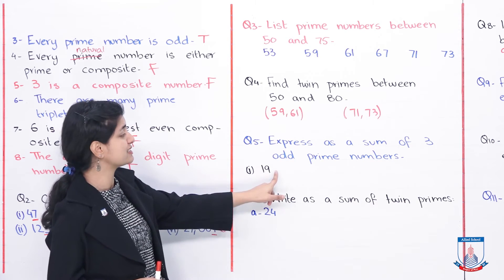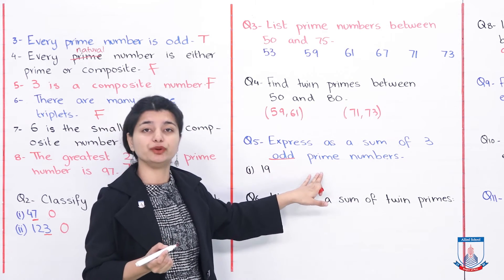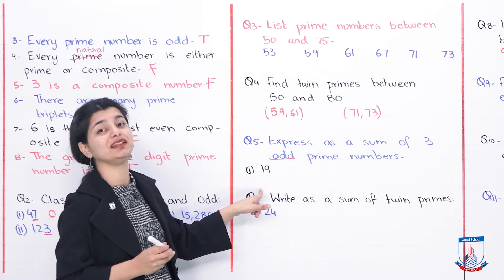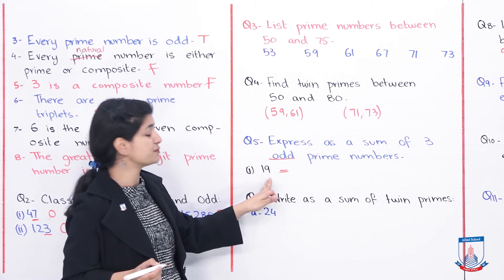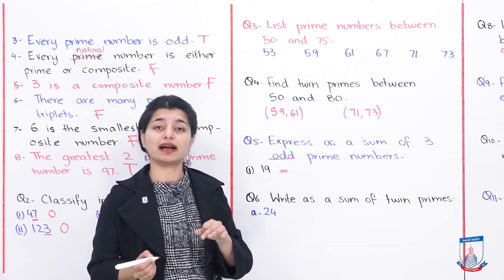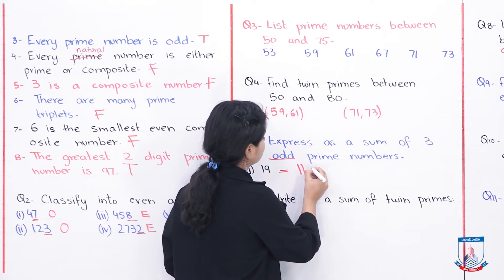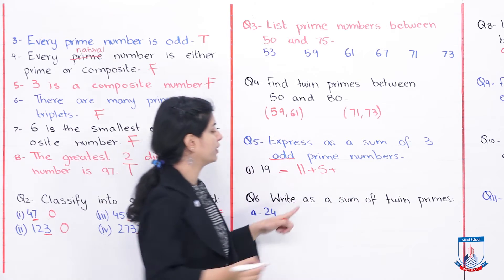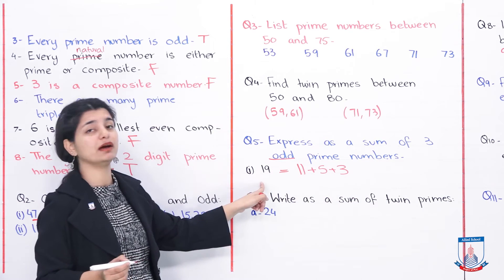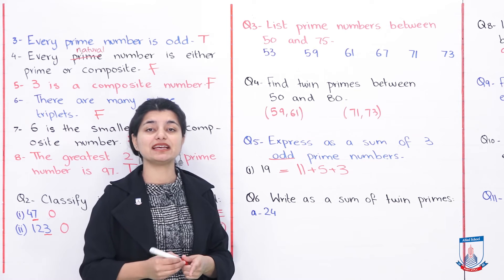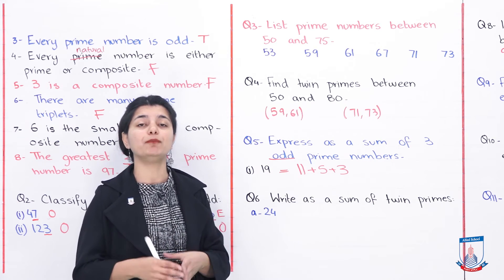Express 19 as a sum of three odd prime numbers. We know all prime numbers are odd. To make 19 using three prime numbers: 11 plus 5 plus 3 equals 19. You can use the same approach for the other parts of this question — find prime numbers that add up to the target number.